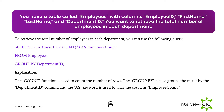Next Scenario: You have a table called Employees with columns Employee ID, First Name, Last Name, and Department ID. You want to retrieve the total number of employees in each department. To do this, you can use the following query. The COUNT function is used to count the number of rows. The GROUP BY clause groups the result by the Department ID column, and the AS keyword is used to alias the count as Employee Count.